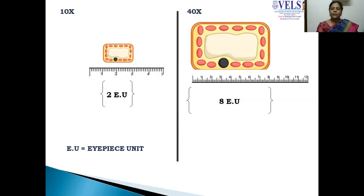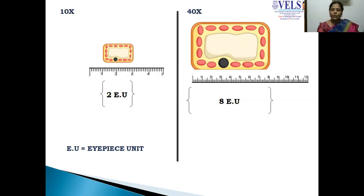Now I am switching the lens to high power, that is 40x, and measuring the size of the same object. Now it shows 8 IPS micrometer units, which means the size of the object has not physically enlarged or changed. Only we are switching the IPS micrometer from low power to high power. This shows that the ocular measurement corresponds to the length of the object, which depends on the objective lens being used.